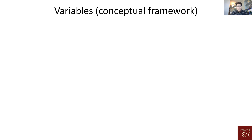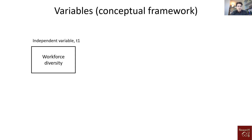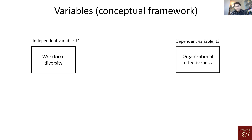Let me explain all these things using an example. We have an independent variable — workforce diversity — which means diversity in the workforce of a company, like cultural diversity, gender diversity, or any kind of diversity in an organization. Then we have a dependent variable called organizational effectiveness, which can be measured in different ways such as productivity. In general, we look at whether the independent variable has an effect on the dependent variable.